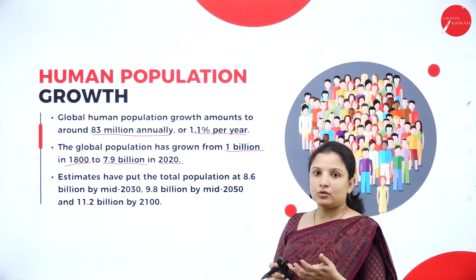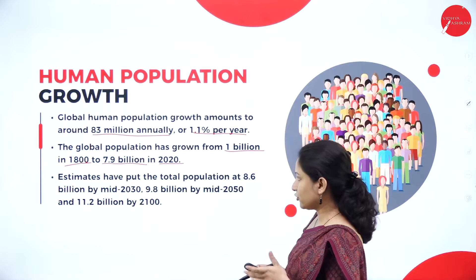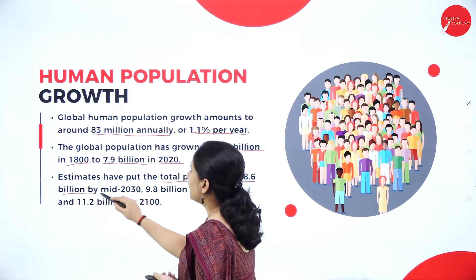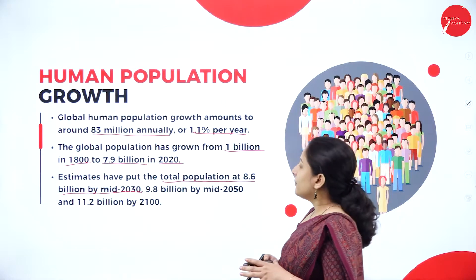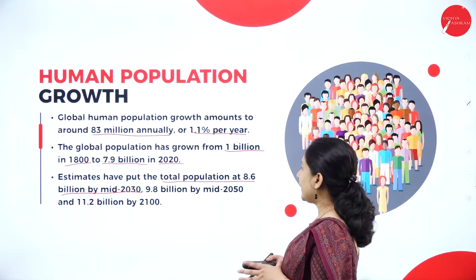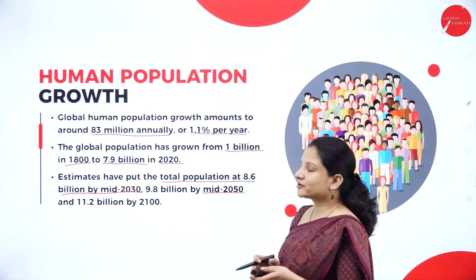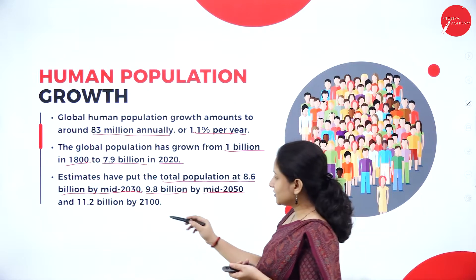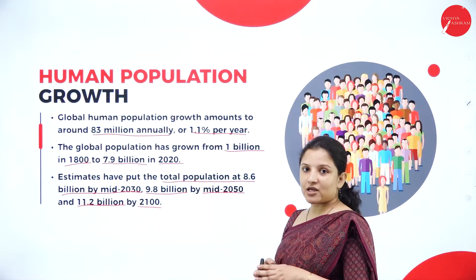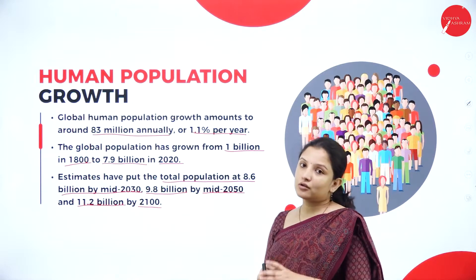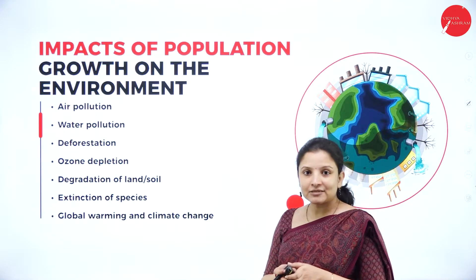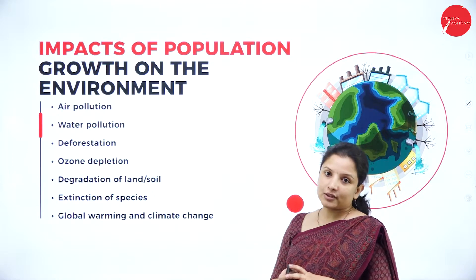Estimates from population growth studies put the total world population at 8.6 billion by the middle of 2030, 9.8 billion by the middle of 2050, and 11.2 billion by 2100. This drastic increase in population in the future can pose a lot of problems to the environment and to human beings. So let's understand what are the impacts of population growth on the environment.